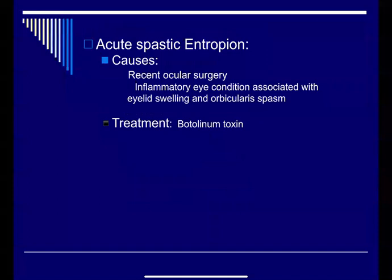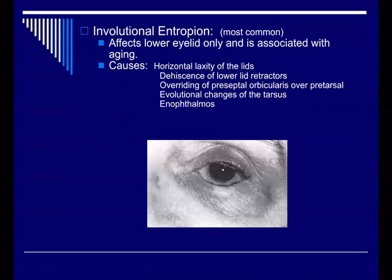For acute spastic entropion, which is acute blepharospasm, it sometimes happens after ocular surgery, inflammatory eye conditions, or conditions associated with eyelid swelling and orbicularis spasm. The treatment is botox. I've seen tremendous improvement in patients with blepharospasm — we usually give them three or four sessions and then patients improve.